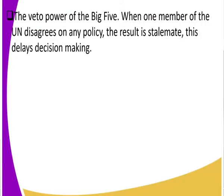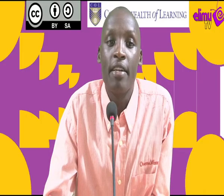Another challenge is the veto power of the Big Five. Earlier we looked at what the veto power and the Big Five are — the Big Five are the USA, China, Russia, Britain, and France. With this veto power, if one member does not agree with a certain decision, then a resolution cannot be made. Meaning, if one says yes and the others disagree, they can't reach a resolution. This veto power has really delayed the decision-making process of the United Nations.